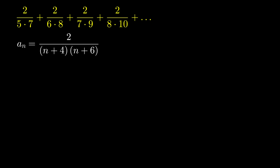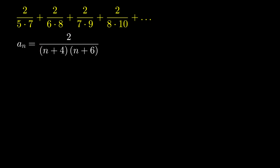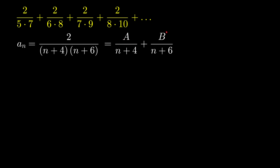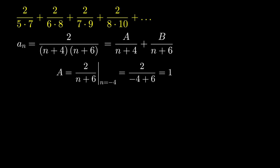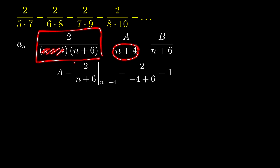Now let's do partial fraction decomposition for this rational function. So this rational function can be written as the sum of two fractions: a constant over (n plus 4), plus another constant over (n plus 6). And what is the fastest way to find these constants A and B? We can easily find these constants using the cover-up technique.